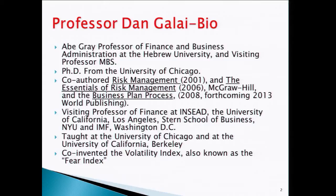My PhD is from University of Chicago on options, and my research is in options and risk management. Among other innovations, I invented the VIX — the volatility index, which is a fear index — now very commonly traded all over the world. It's implied volatility taken from option prices. I also co-authored books on management and a book on the business plan process, which we are writing now in English — the English version should be out by the beginning of 2014.